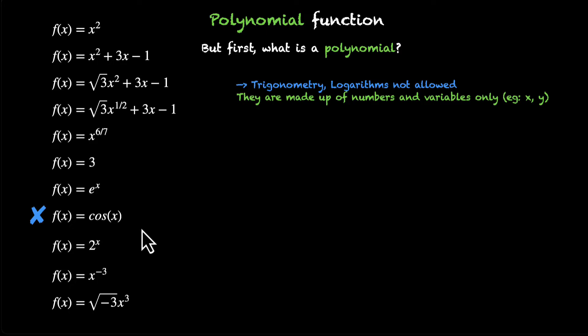What else can we eliminate? Well, just like trigonometric functions, exponential functions are also not allowed. So you can't have something like e to the power x. This is an exponential function. This is not a polynomial. Similarly, 2 to the power x, this is also not allowed. This is also an exponential function. Here we have just replaced e with 2. So these three are out. What else?